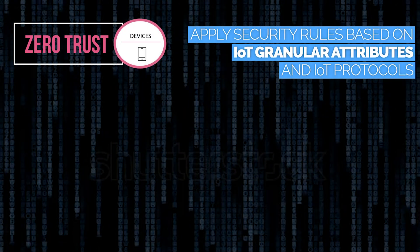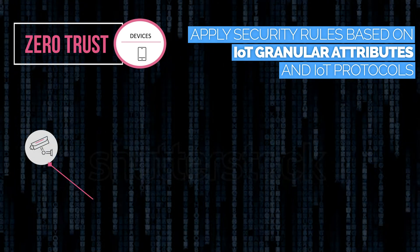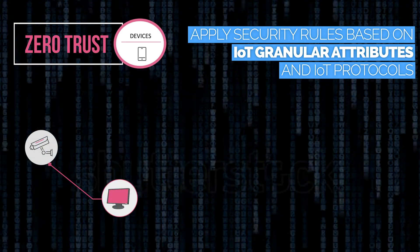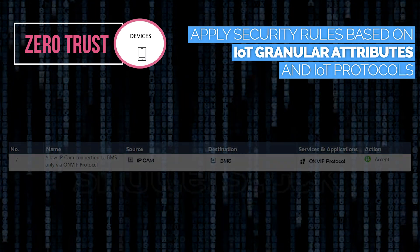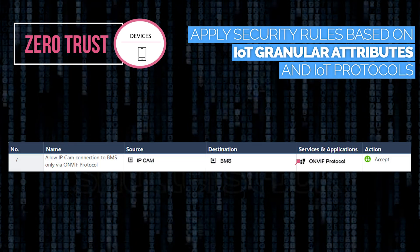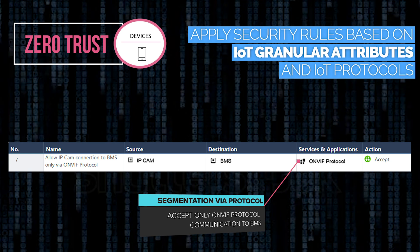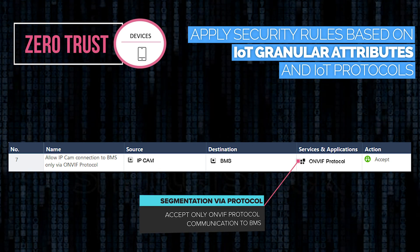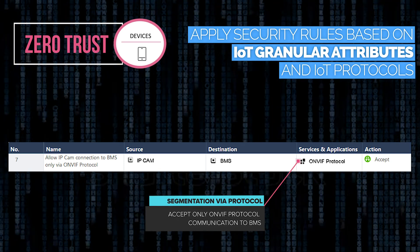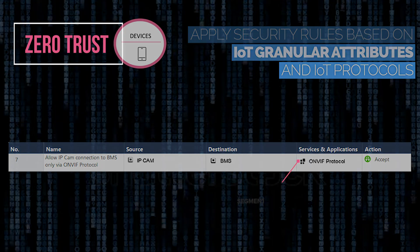Zero trust devices is about securing every device connected to your network. Here, we use Infinity for IoT to identify and block unauthorized access to and from IoT devices. This security rule limits the communication between IP cameras and the building management system to ONVIF protocol only.